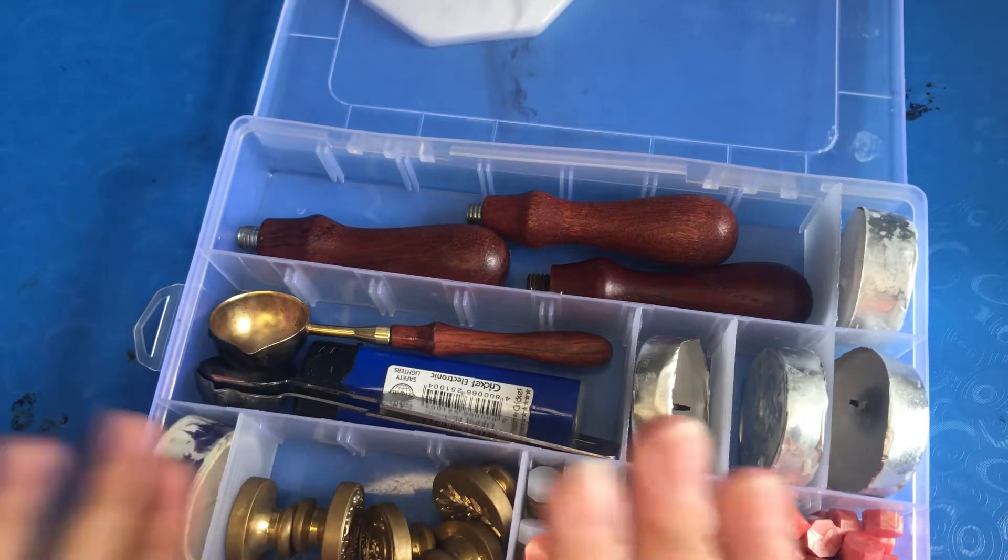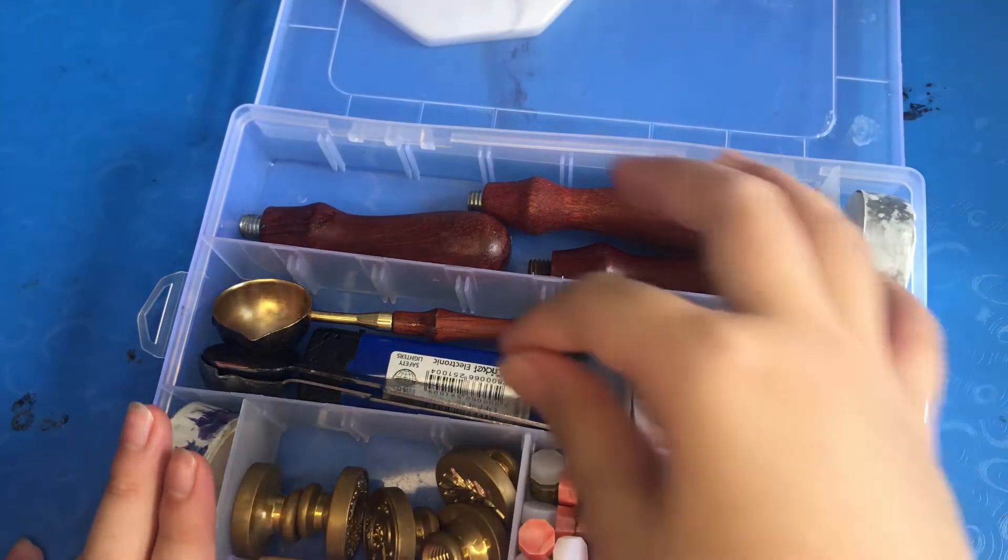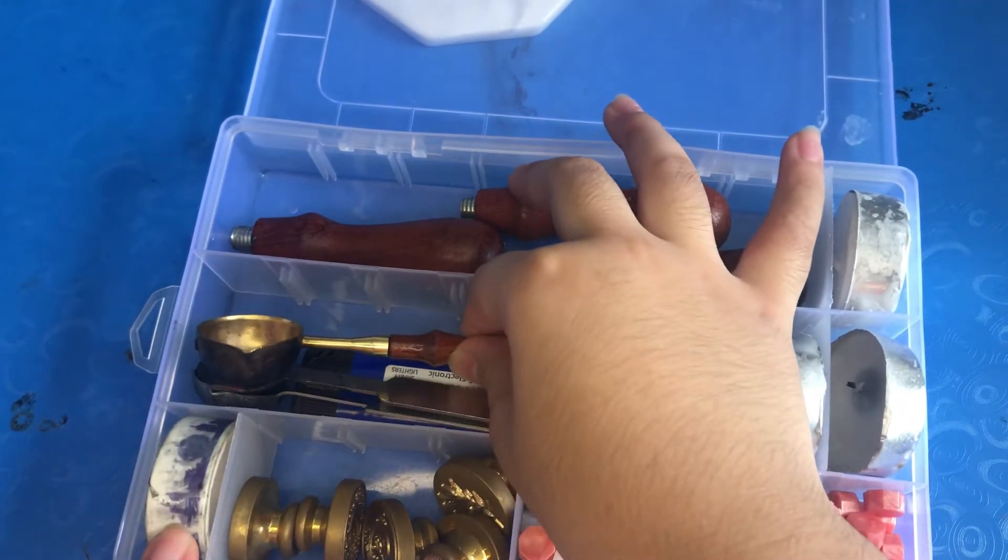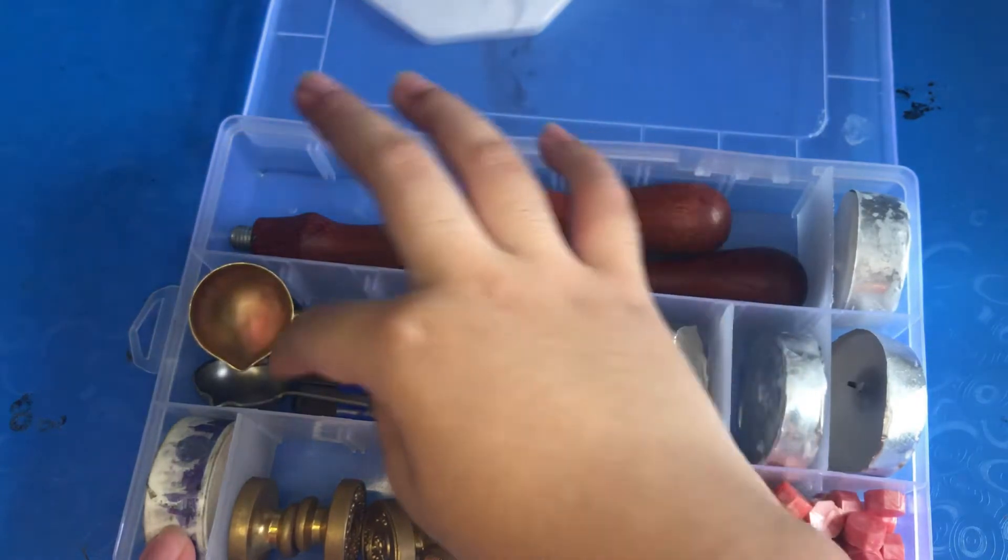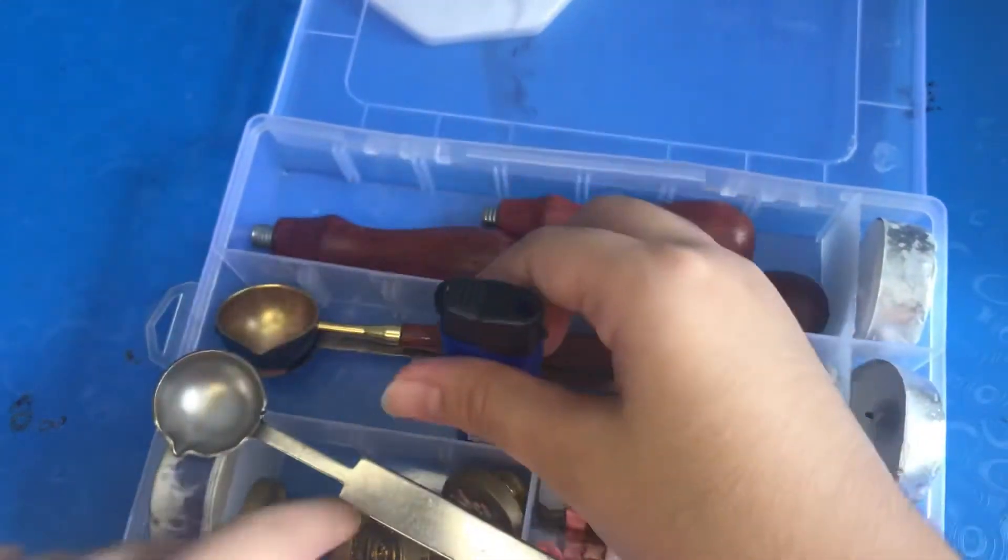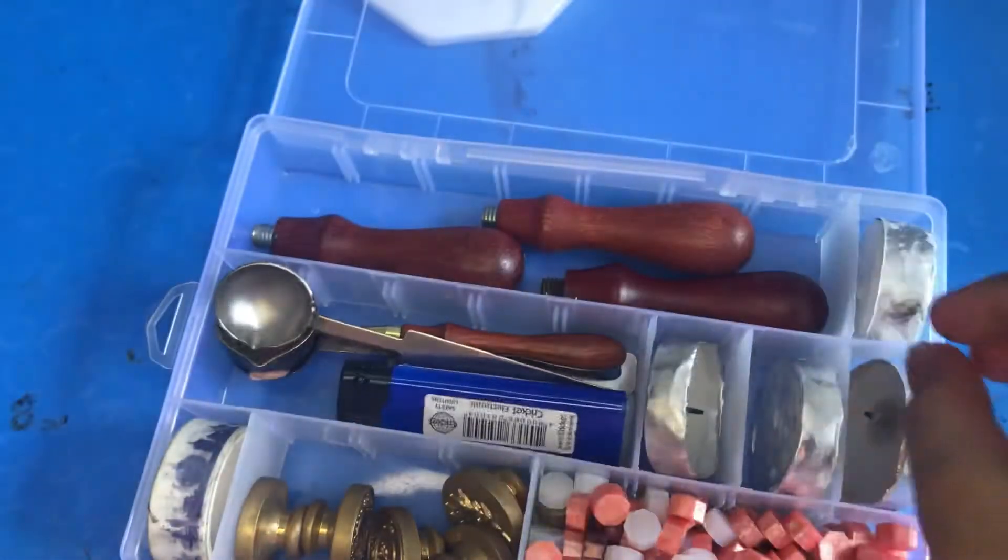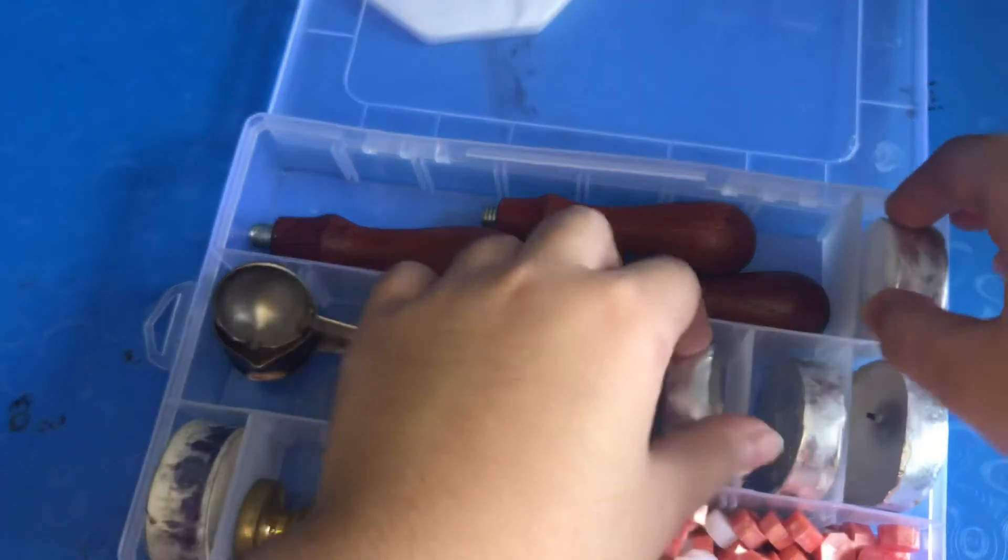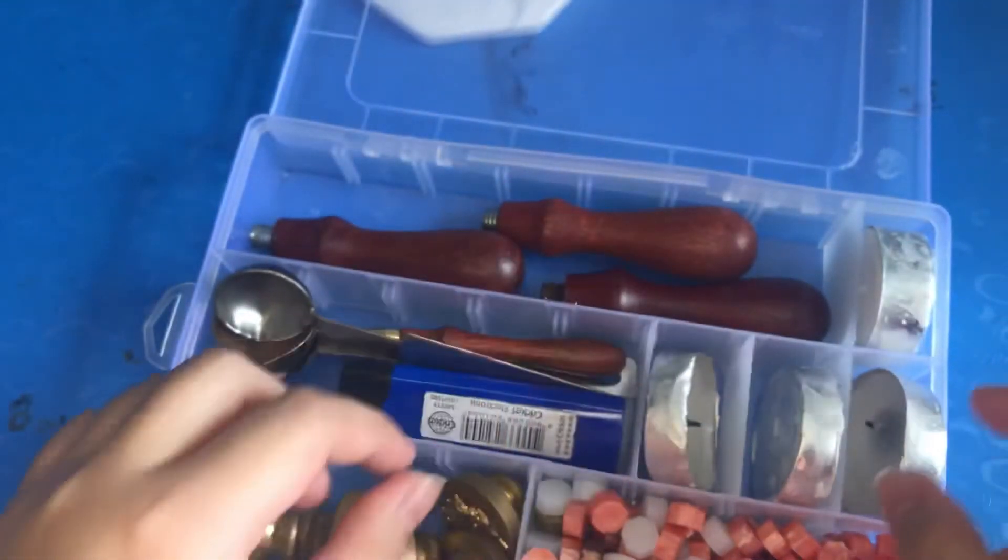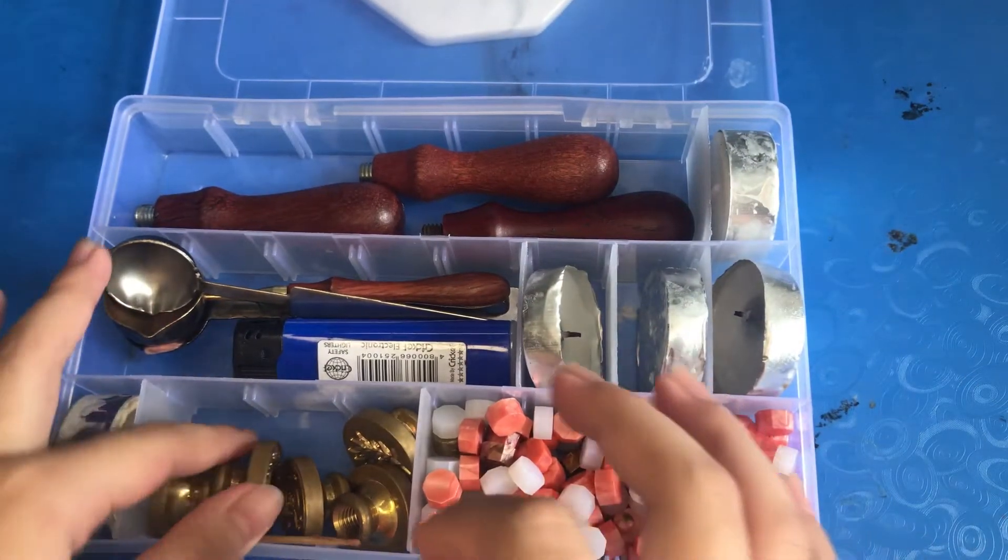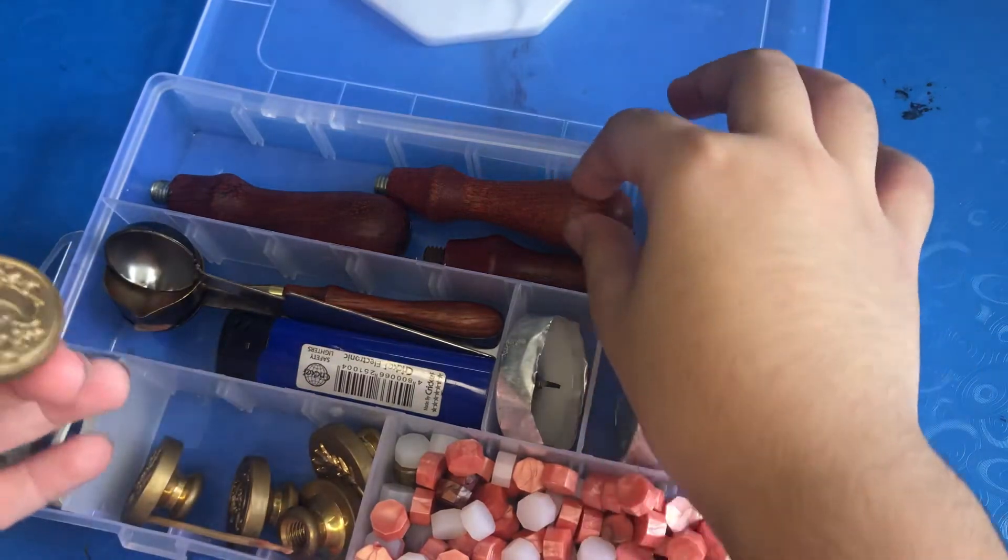The candle keeps sticking so I use washi tape to block it. Here I have my spoons, my lighter, my candles over here, my wax seal beads, and here are the wax stamp pens.